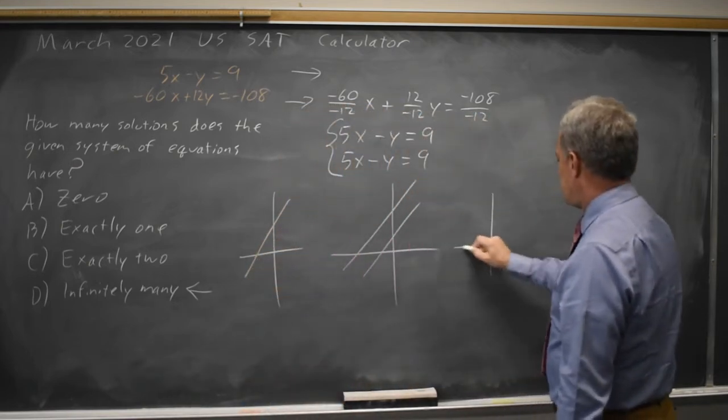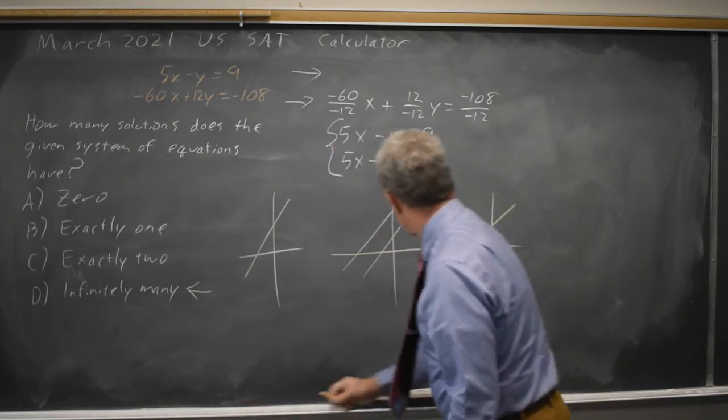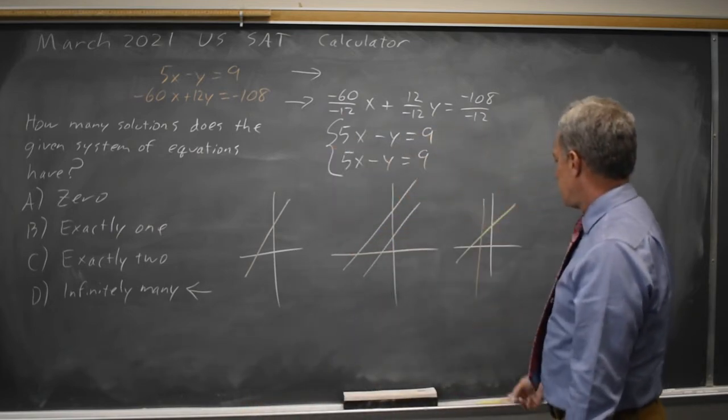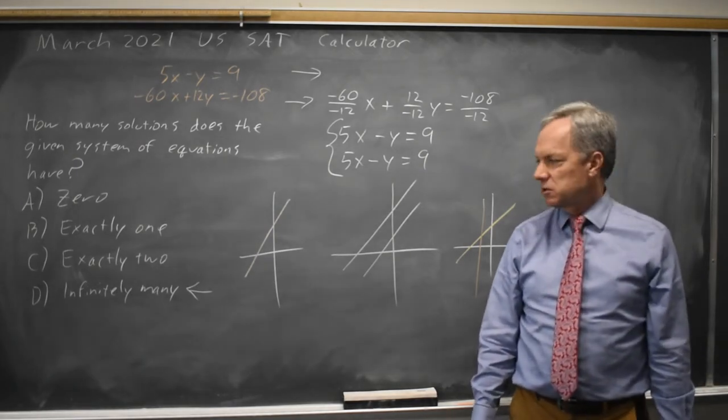And if you have different slopes, you get a solution at the point of intersection, exactly one solution.